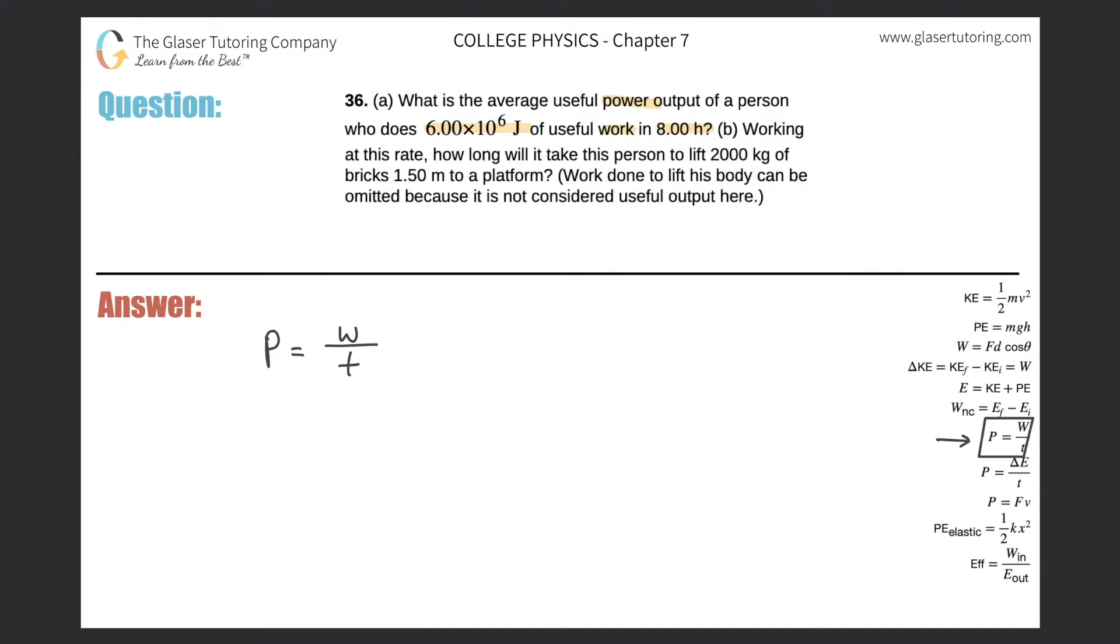Now, remember, work has a unit of joule, and time has a value of seconds. And that's what a watt is. So for letter A here, all we have to do is basically plug in these values. The only thing, though, is that the watts are given to us in joules, so that's nice, 6 times 10 to the 6 joules. But the time is in hours. And remember, my time value has to be in seconds down here. So all we have to do is a simple conversion.